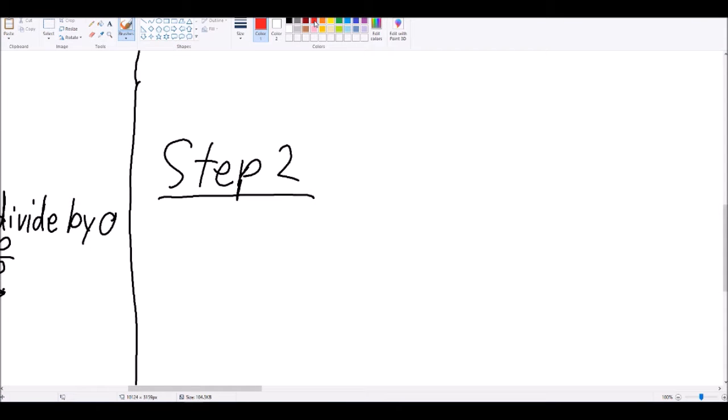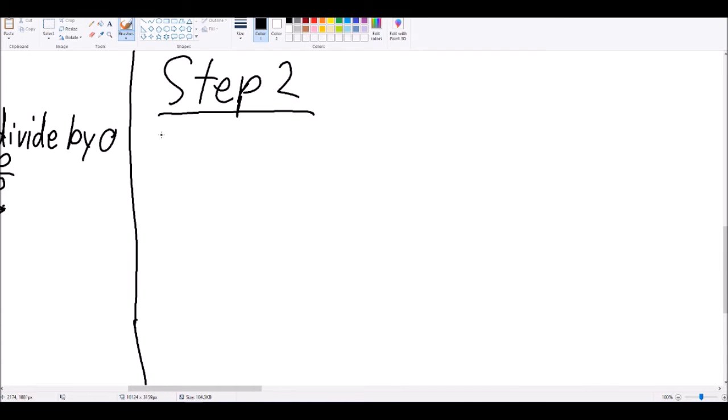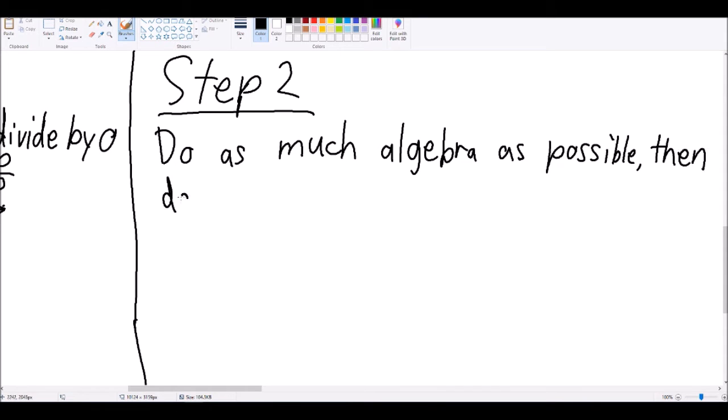Step 2. If step 1 didn't work, your function is not continuous. I feel sorry for you, because things are about to get complicated. In this step, do as much algebra as possible and cancel out as much as you can.